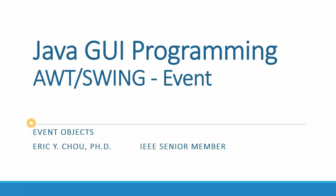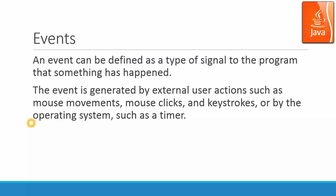In this lecture, we are going to continue our talk on event-driven programming. An event object carries the information for the event activities. An event can be defined as a type of signal to the program that something had happened. The event is generated by external user actions such as mouse movement, mouse click, and keystrokes, or by the operating system such as a timer.